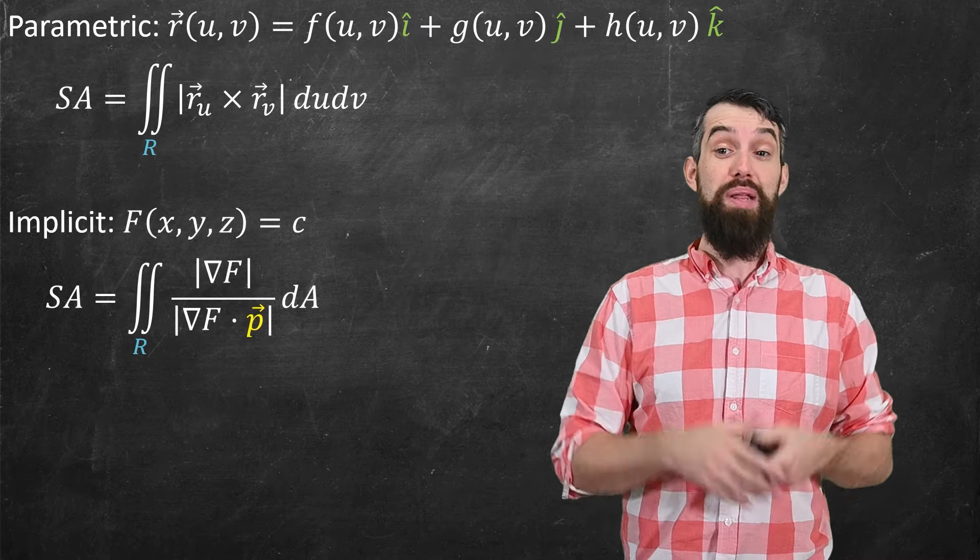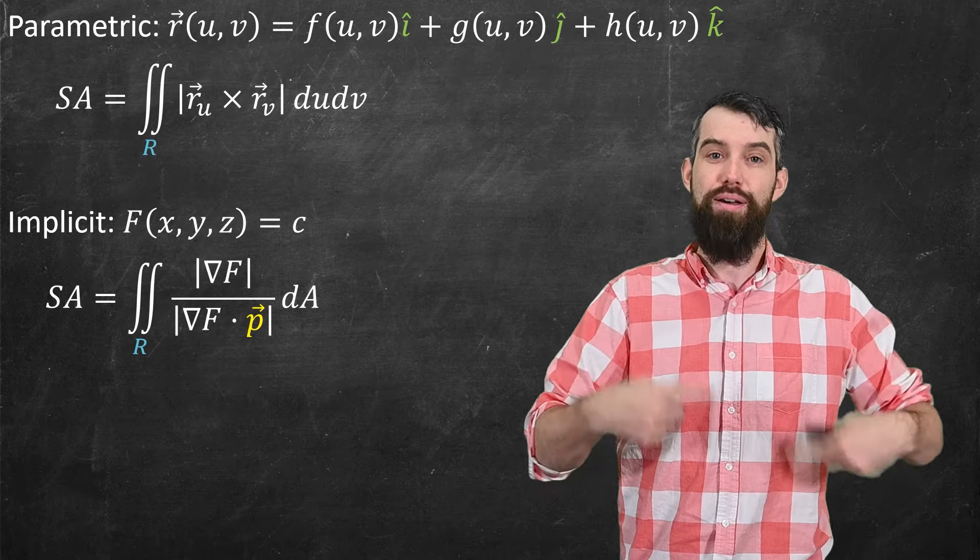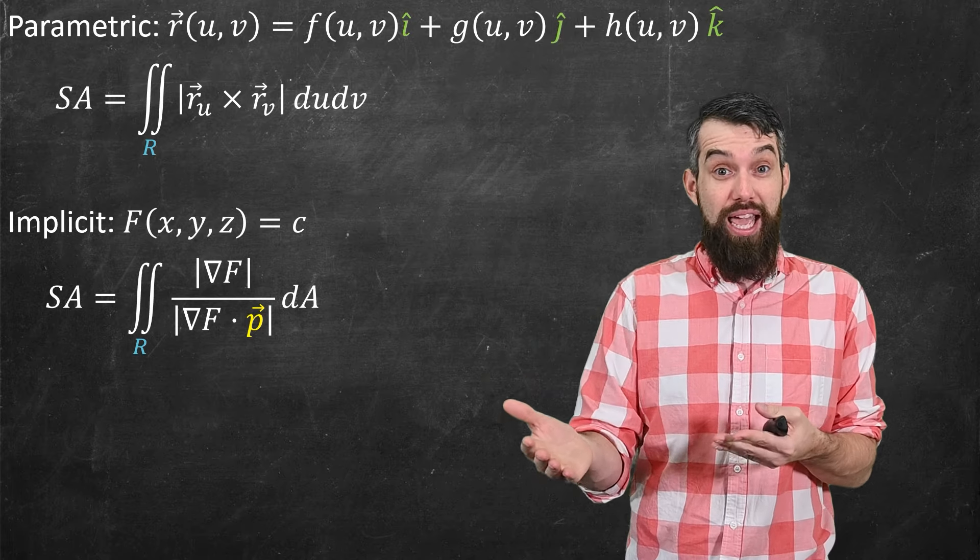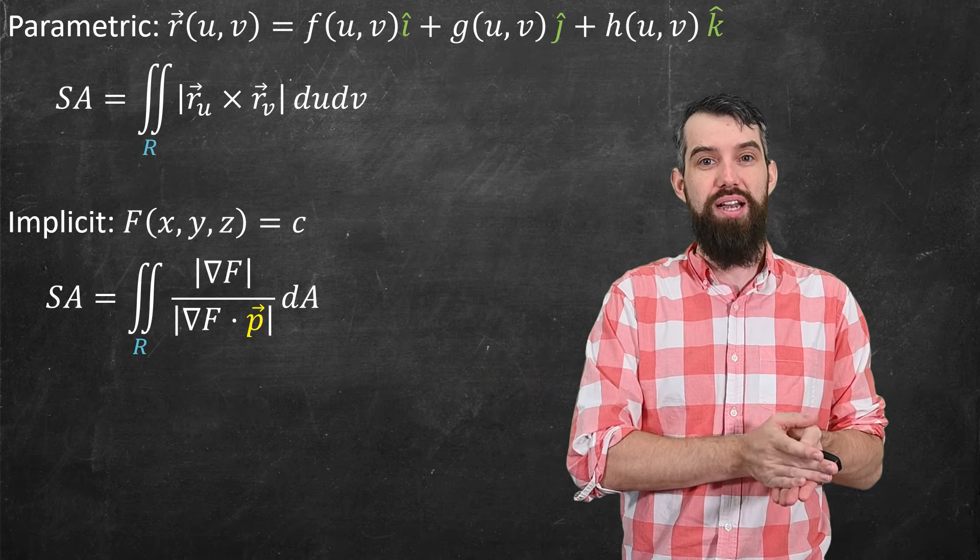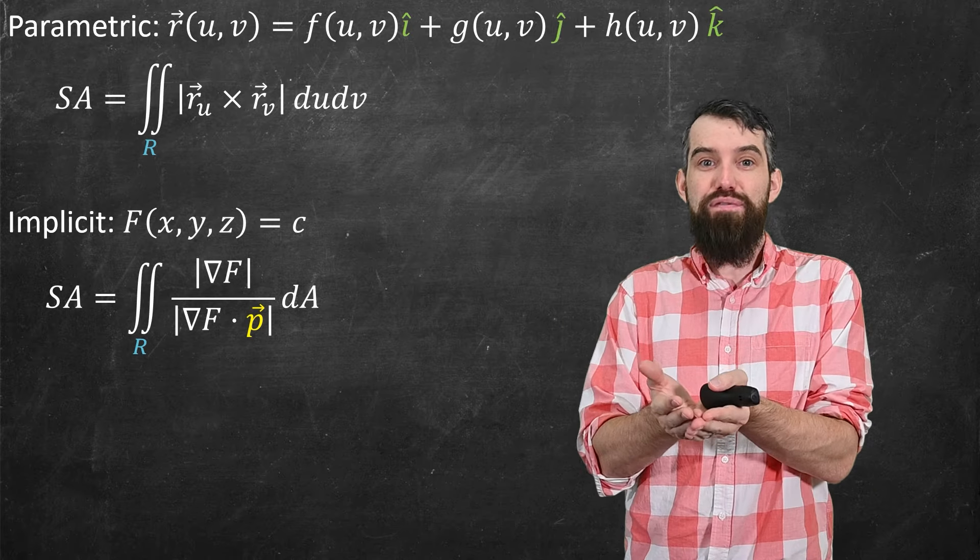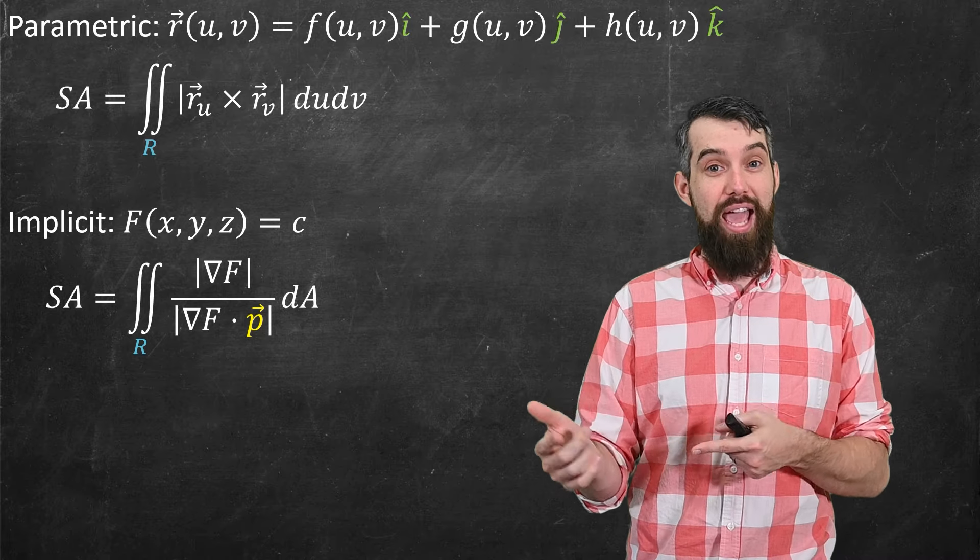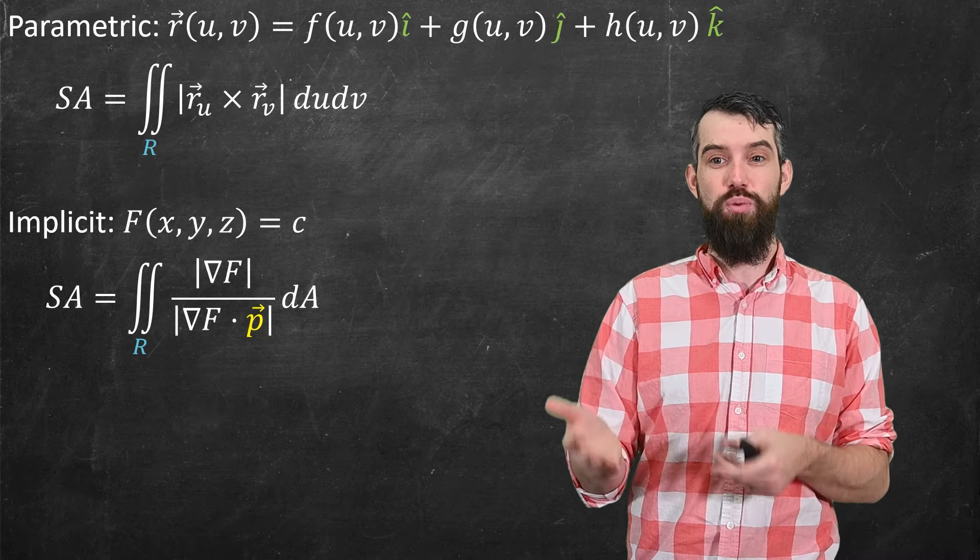Alternatively, it might be described implicitly with some big function capital F of x, y, z equal to c, a level surface. And when that was the case, we've previously seen the surface area could be written as the double integral of the length of the gradient of f divided by the absolute value of the gradient of f dotted with the vector p, which was often k hat, but could be i hat or j hat as well.